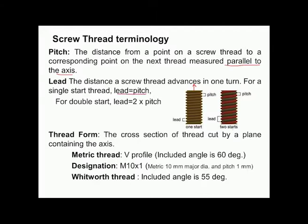For a single start, lead equals pitch, whereas for a two-start screw thread, lead equals twice the pitch. Thread form is the cross section of the thread cut by a plane containing the axis. In the case of metric thread, the thread profile is a V shape with an included thread angle of 60 degrees. In the case of Whitworth thread, the included angle is 55 degrees.